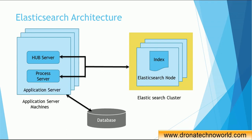Now let's look at this architecture. On the left side of the image we can see the blue boxes - these are the application server machines. Assume there are three machines in your environment; on each machine we install the application server, for example JBoss or WebLogic. In each application server we have the hub server and process server installed. These three machines create one cluster - a group of servers supporting your MDM application. The hub server and process server are connected to the database, which could be Oracle, DB2, or SQL Server - the supported databases for Informatica MDM.